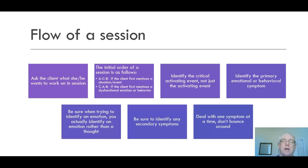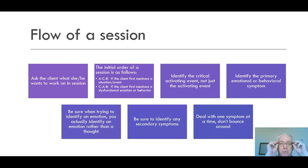If the client starts with a situation — the A — we try to go to C by asking, 'What were you feeling?' or 'What emotion were you experiencing about that situation?' Once we get the C, we can move to the B. If the client opens with C by saying 'I'm really angry' or 'I'm very depressed,' we ask, 'What are you angry about?' — and that brings us to the A. Once we have both A and C, we can move to the B.